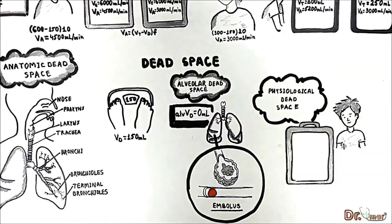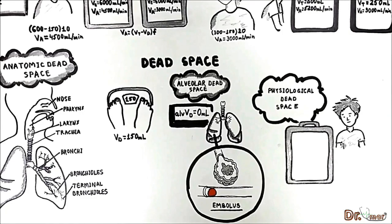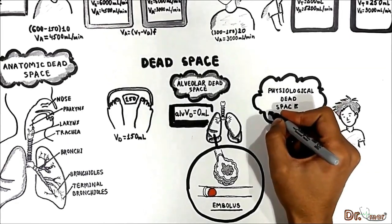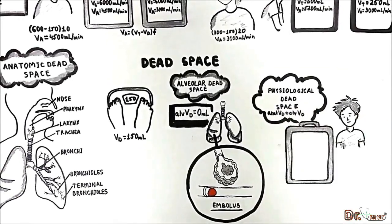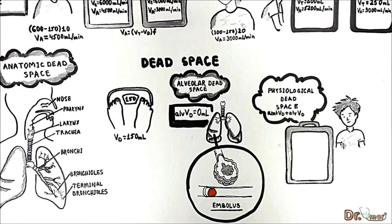Physiologic dead space refers to the total dead space in the lung system. It is anatomic dead space plus alveolar dead space. So if you know the physiologic dead space of a patient, you can determine the presence of alveolar dead space.